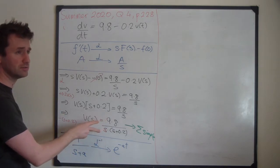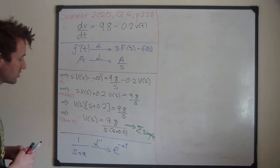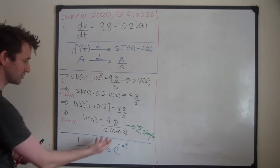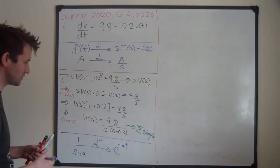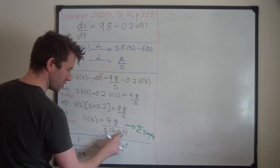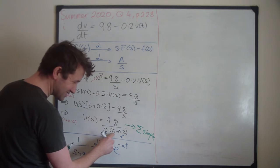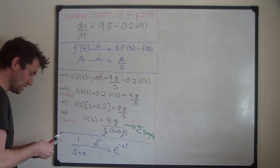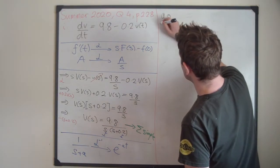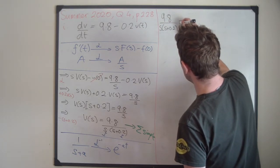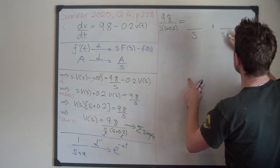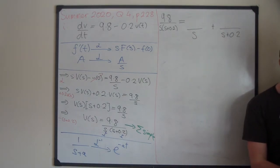Partial fractions means taking a complicated rational function and writing it as a sum of simpler rational functions that are in the tables. The first step is to factorize the denominator — it's already factorized, happy days. Both s and (s+0.2) are Rule 1 factors. Since they're all Rule 1, we can use the cover-up method. So 9.8 / [s(s+0.2)] equals A/s plus B/(s+0.2), both of which we can invert.